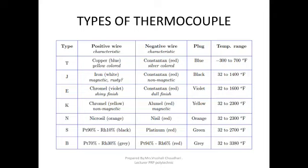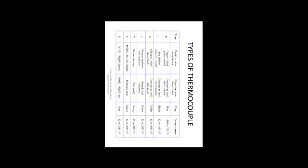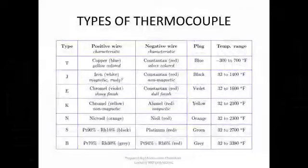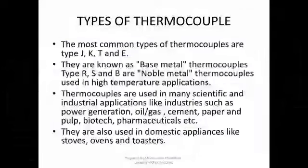Depending on which metals are used to make a thermocouple, their application, sensitivity, and temperature range will change, so we choose a particular thermocouple according to application. The most common types are J, K, T, and E — also known as base metal thermocouples. Types R, S, and B are called noble metal thermocouples, used in high-temperature applications, while J, K, T, and E are used for low to normal temperatures.